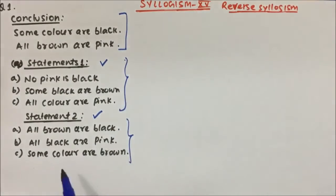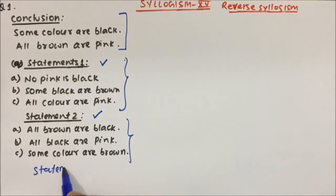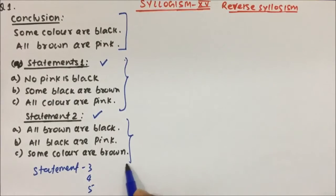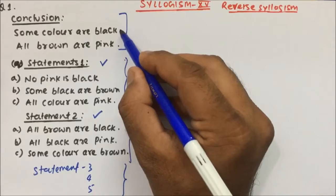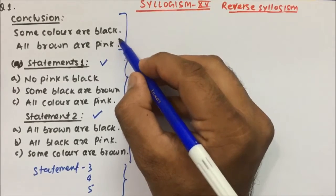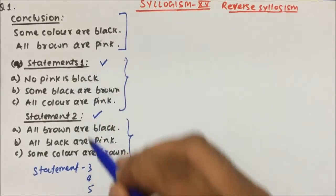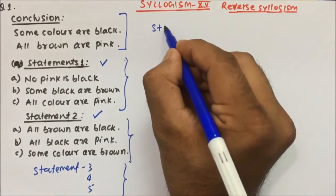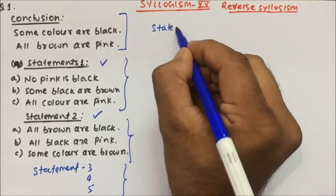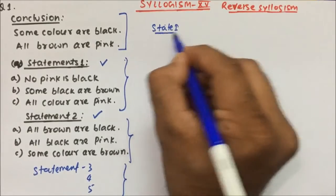For all the statements we have to draw the Venn diagram and then we have to tell from which statement we get conclusion 1 and conclusion 2. So let's take statement 1 and try to draw the Venn diagram.